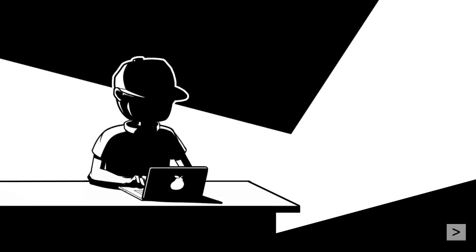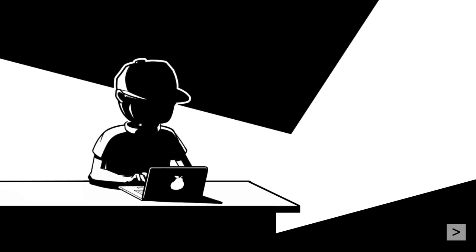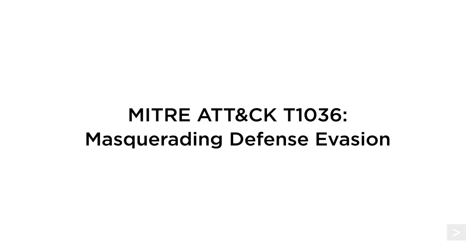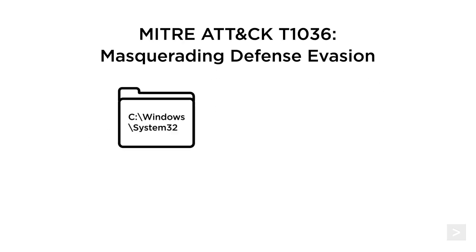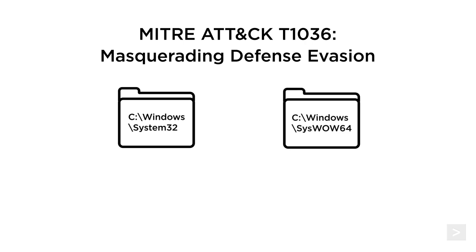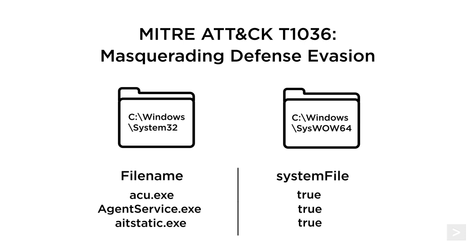While use cases abound, let's examine a situation where an attacker might try to use a different version of a system command without overwriting the original, or try to avoid detection by running the process from a different folder. This falls under the MITRE ATT&CK technique T1036, masquerading defense evasion. Splunk Behavior Analytics, part of Splunk Enterprise Security Cloud, checks against a list of system processes which run inside the Windows System32 or Windows SysWow64 directory.